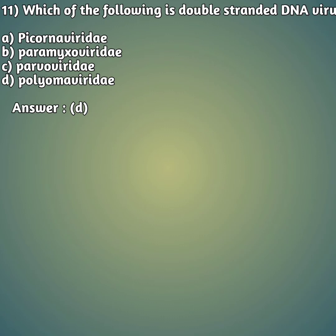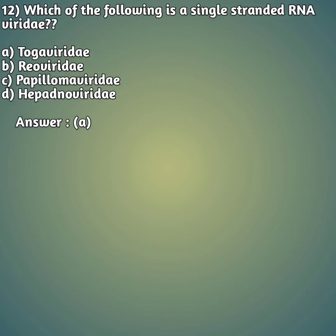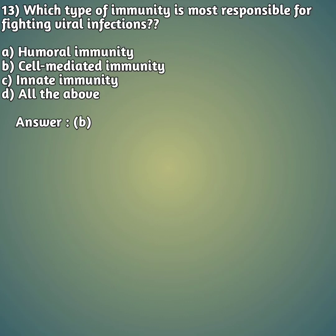Eleventh question regarding single-stranded RNA viridae — the right answer is polyoma viridae, option D. Moving on to the twelfth question: which of the following is a single-stranded RNA viridae? Option A: toga viridae. Option B: reo viridae. Option C: papilloma viridae. Option D: hepadna viridae. The right answer is toga viridae.